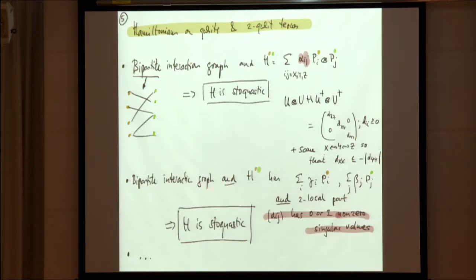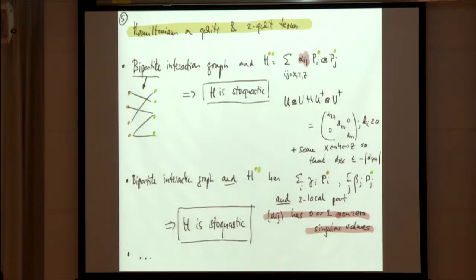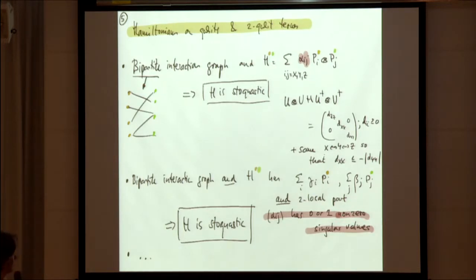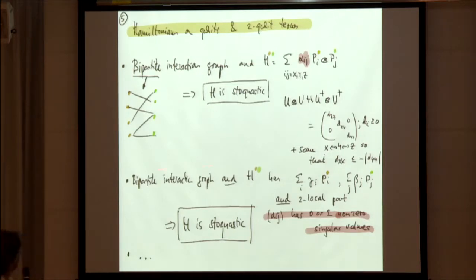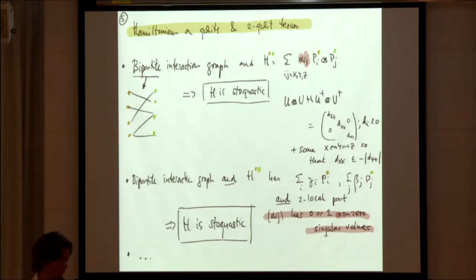For a bipartite interaction graph where all the interactions are the same and there are no one-local terms, so only two-local terms with IJ ranging over X, Y, Z, the Hamiltonian is stoquastic. This follows from a unitary rotation giving a singular value decomposition in diagonal form with non-negative factors, plus additional freedoms to flip signs. If there are local fields and the two-local part has only zero or one non-zero singular values, it's also stoquastic. For two or three non-zero singular values the situation is more complex, but I believe the whole two-qubit case can be mapped out — and I'm not aware that this is written down somewhere, which would be useful.